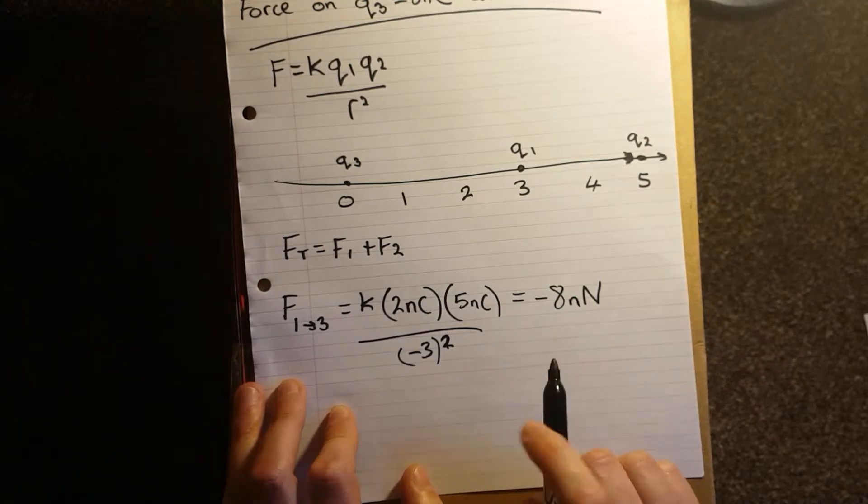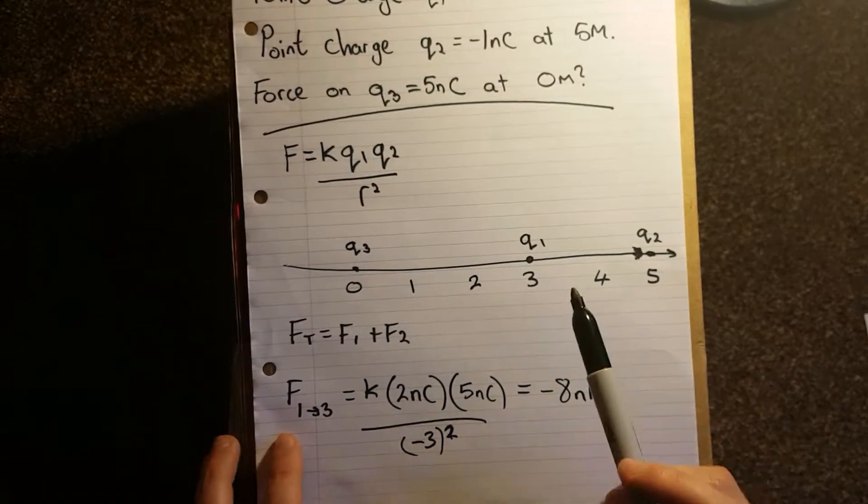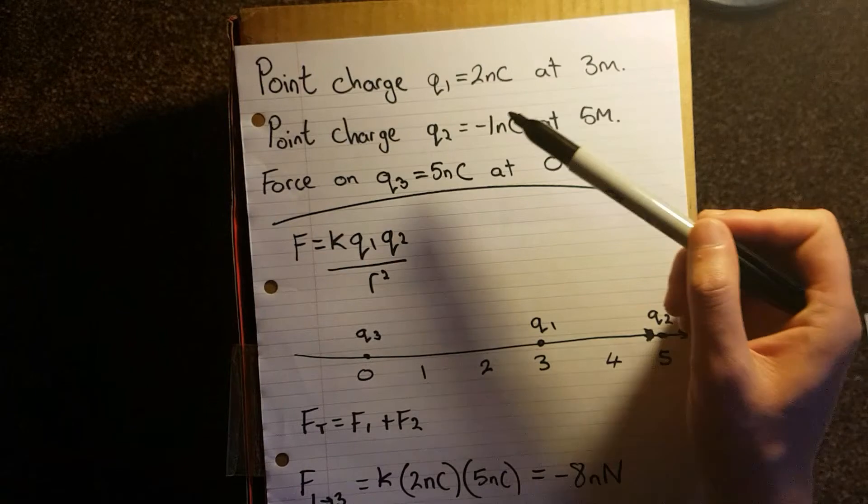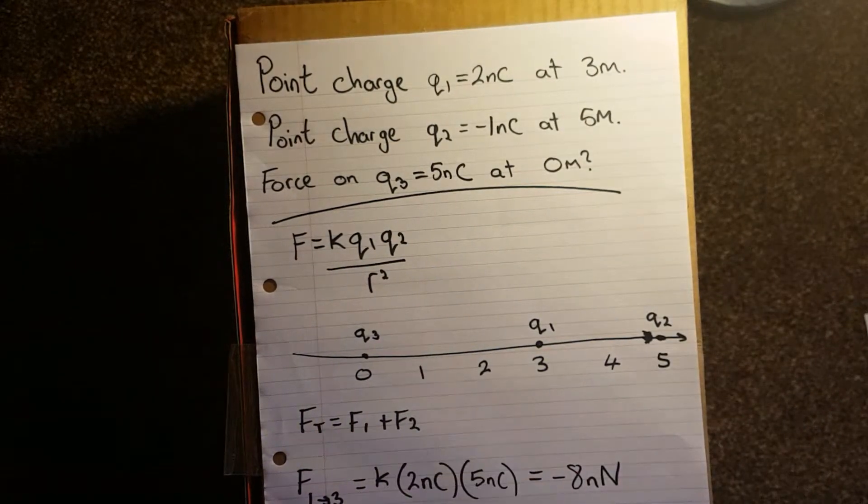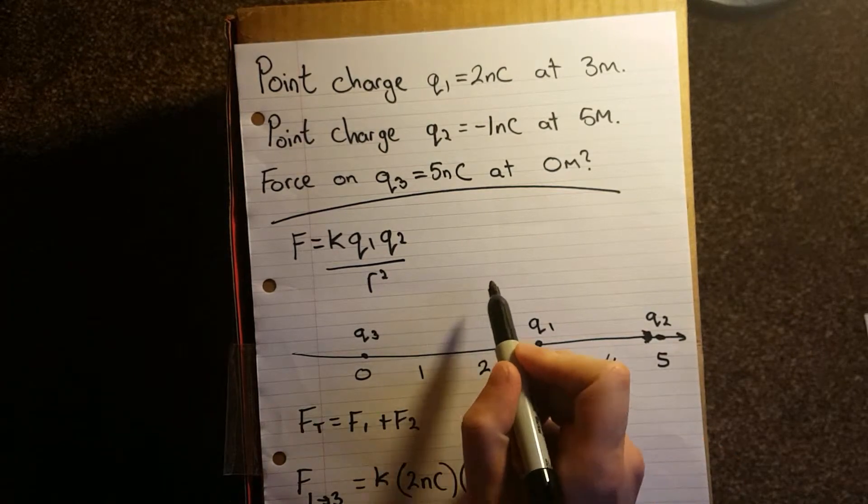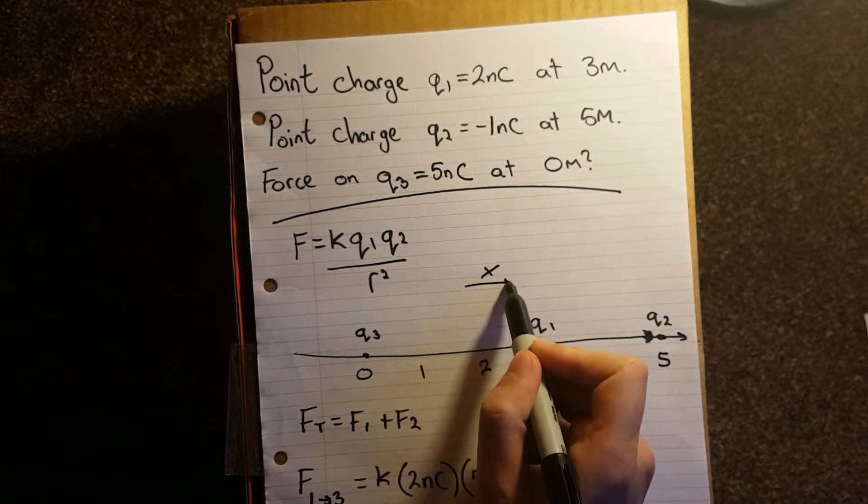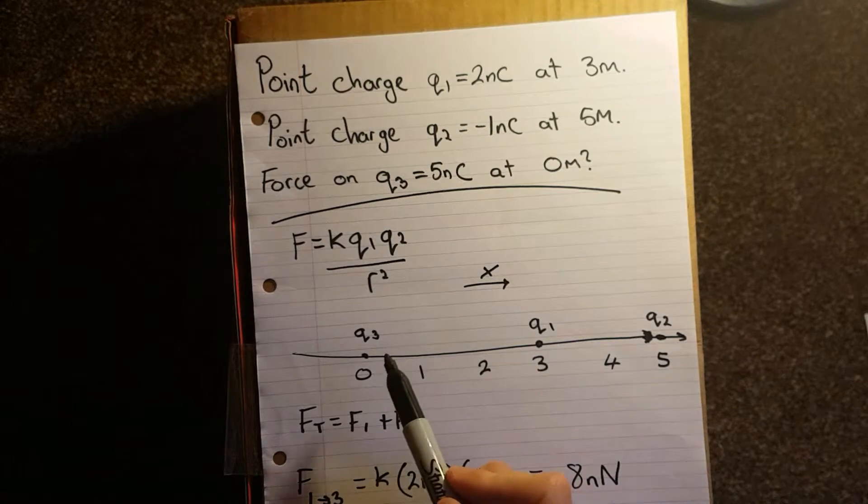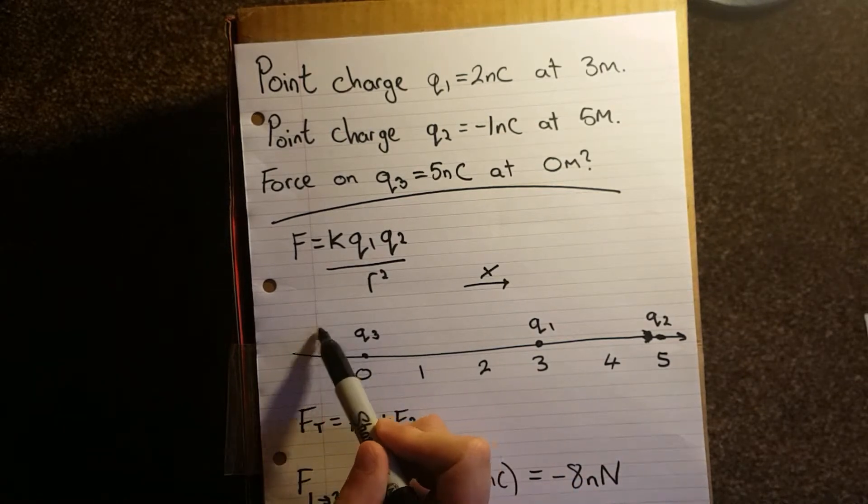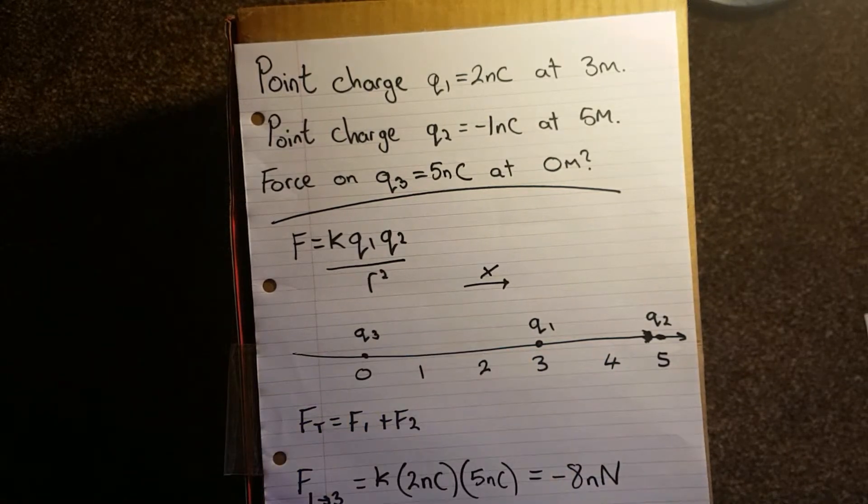The reason it's minus 8, is if you look carefully, Q1 is a positive charge. Q3 is a positive charge. So they must repel. If the x-axis is going this way, and if they repel, then the force on Q3 is acting this way. So just be careful.